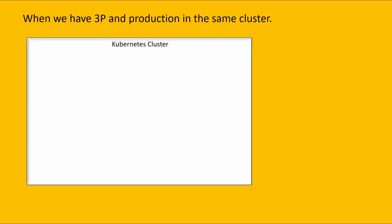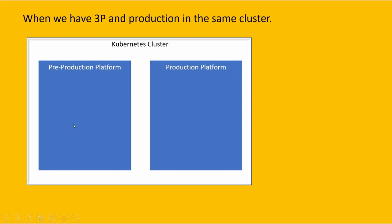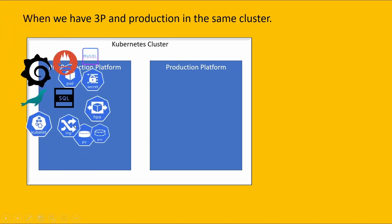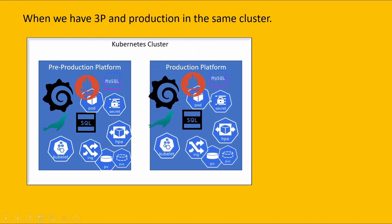The third use case is when we have a pre-production and production environment in the same cluster. We have one Kubernetes cluster with a pre-production platform and a production platform. Inside pre-production, we can test all objects and run a pilot phase. Once everything is working, we implement it in the production platform. So within one cluster, we can have both the pre-production and production platforms.